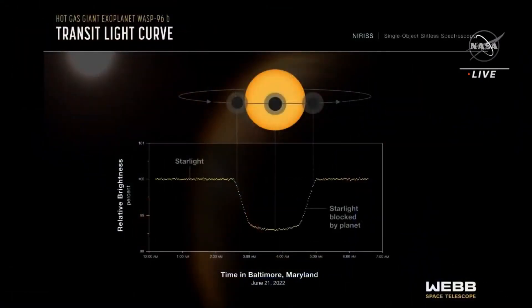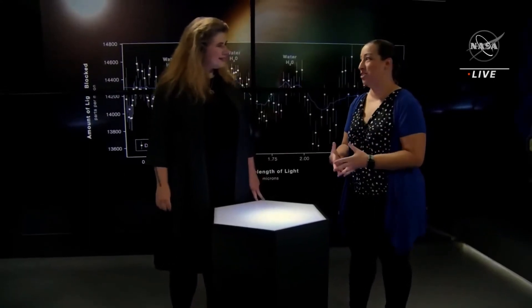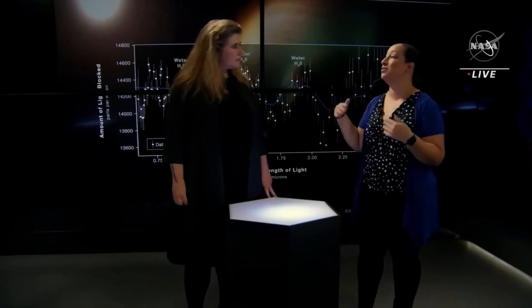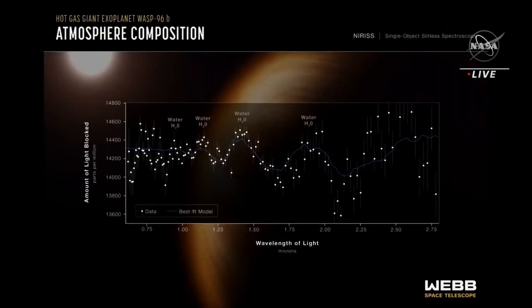A transmission spectrum is made by comparing starlight filtered through a planet's atmosphere as it moves across the star to the unfiltered starlight detected when the planet is beside the star. Researchers are able to detect and measure abundances of key gases in a planet's atmosphere based on the absorption pattern—the locations and heights of peaks on the graph. In the same way that people have distinctive fingerprints and DNA sequences, atoms and molecules have characteristic patterns of wavelengths that they absorb.